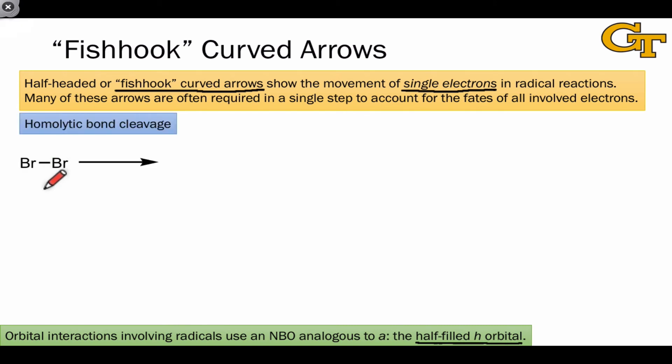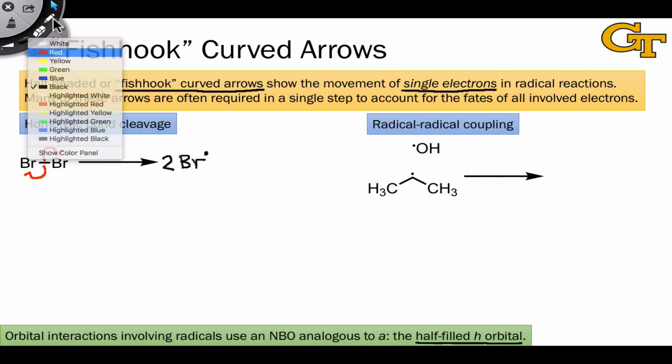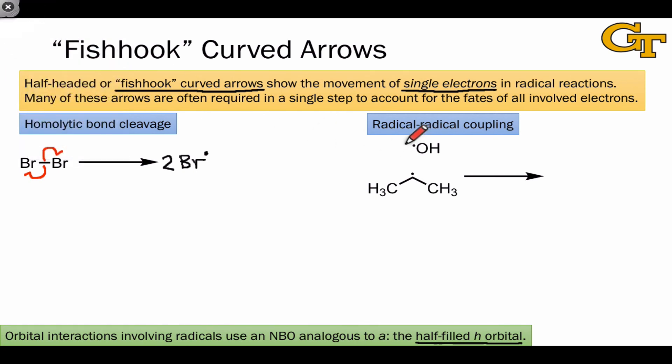The first type of electron flow you'll see in radical reactions is homolytic bond cleavage, and this is simply the cleavage of a single bond between two atoms, with one electron going to each atom involved in the bond. The reverse of this is the coupling of two radicals to form a new single bond, like we see on the right-hand side of the slide, and this is shown by showing both radical electrons heading to the space between the two radicals, signifying the formation of a new bond.